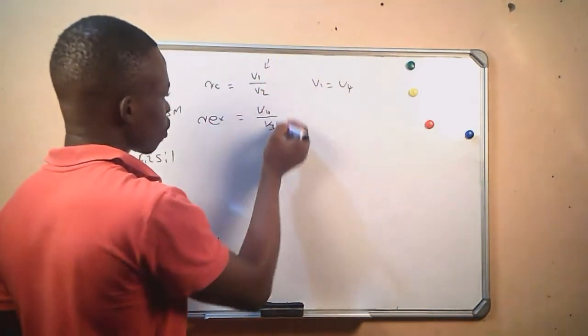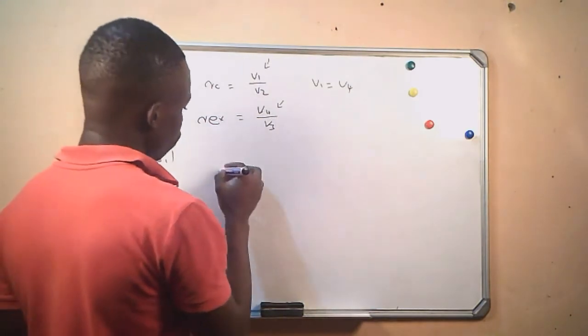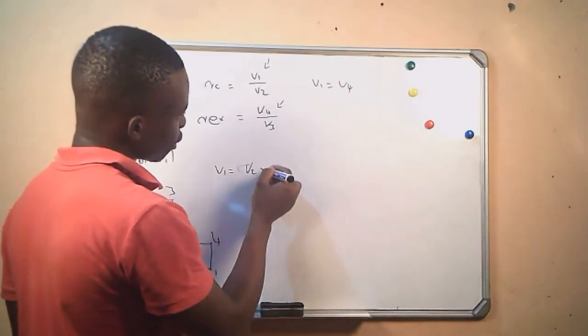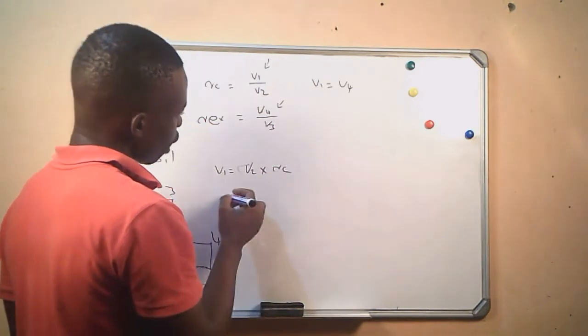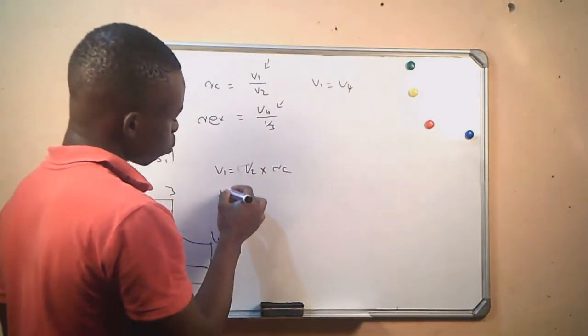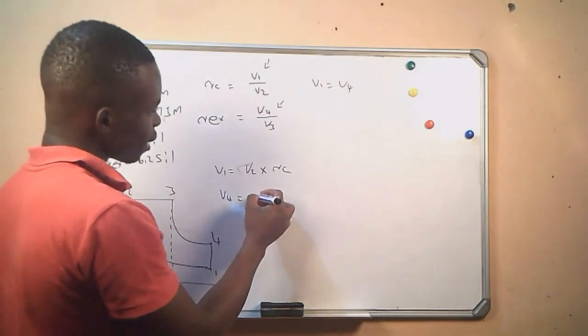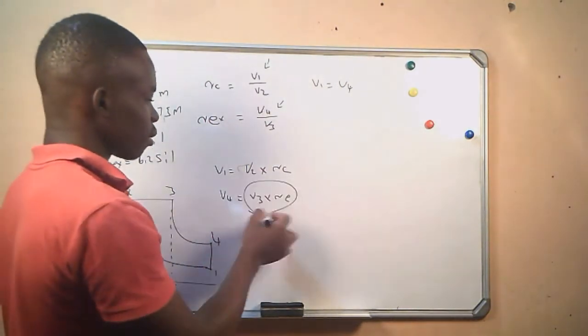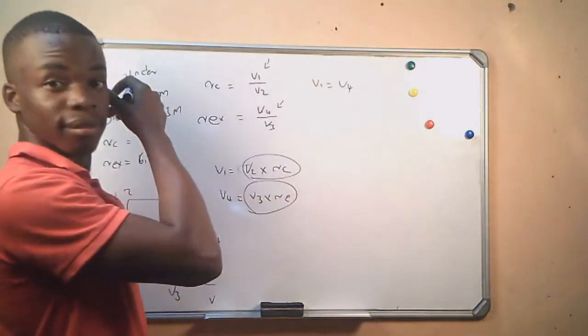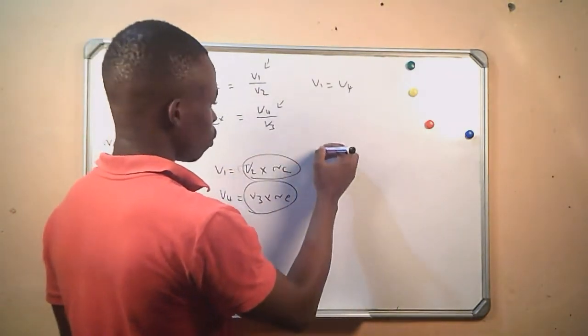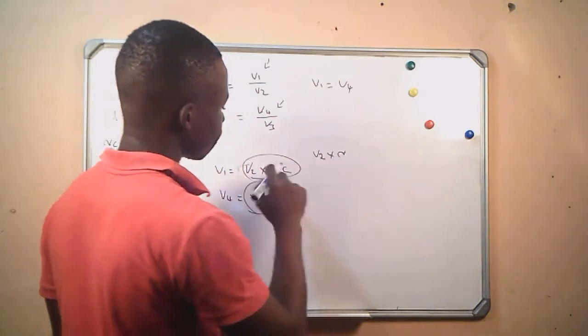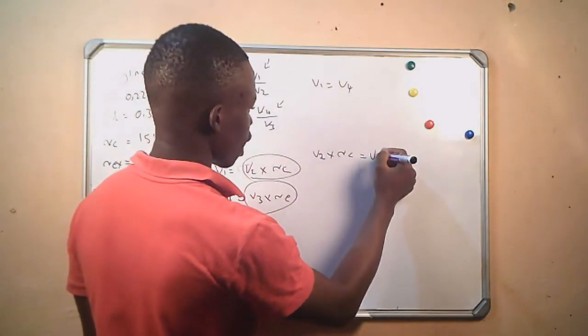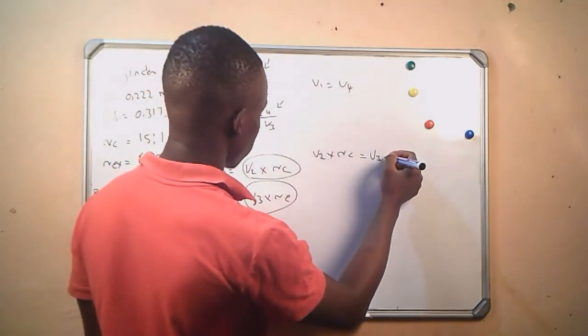We will make these the subject of the formula. V1 equals V2 times the compression ratio, and V4 equals the expansion ratio times V3. Since V1 equals V4, we have V2 times the compression ratio equals V3 times the expansion ratio.